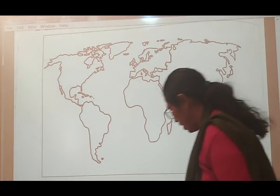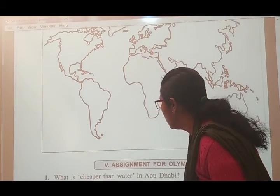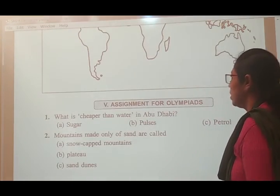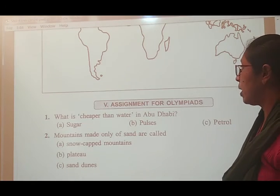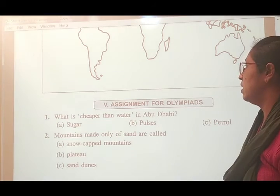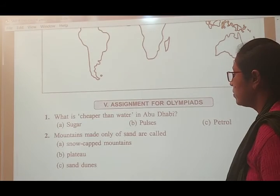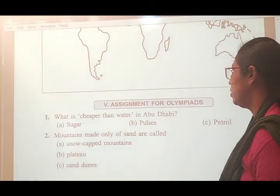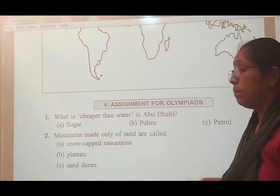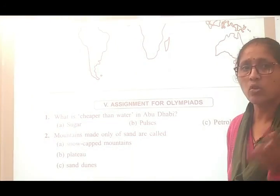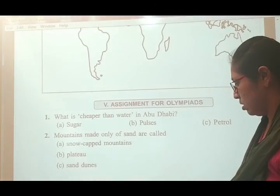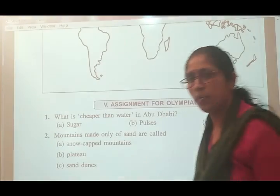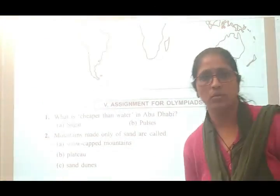Next, Olympiad questions. What is cheaper than water in Abu Dhabi? That is petrol — petrol is cheaper than water in Abu Dhabi. Mountains made only of sand are called sand dunes. So this is your practice book exercise — thank you.